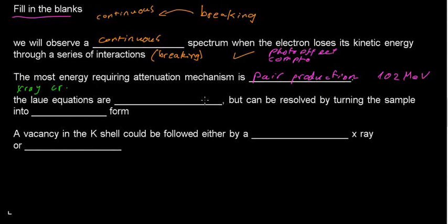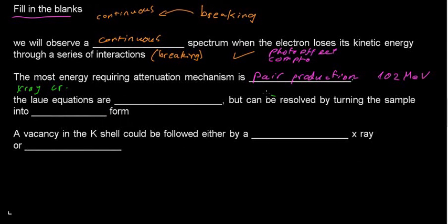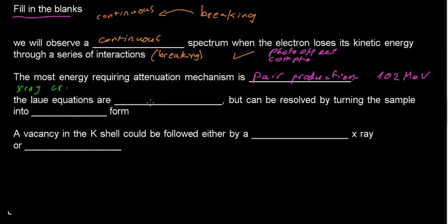Regarding X-ray crystallography: 'The equations are ___, but can be resolved by turning the sample into something.' Based on logic — if something is preventing resolution, there would be too little information and too many variables. This is called overdetermined. The equations are in fact overdetermined.